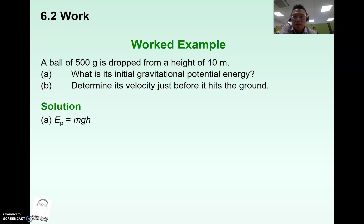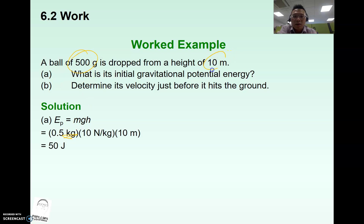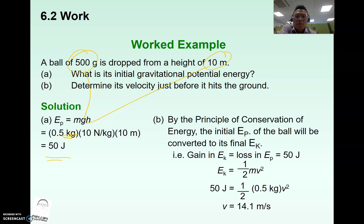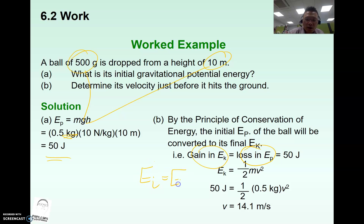For the GPE example, mass is in kg and height is in meters. Once you substitute the variables inside the formula, you get the answer straight away. The common application is to combine energies using conservation of energy, whereby energy gained equals energy lost, or initial energy equals final energy.